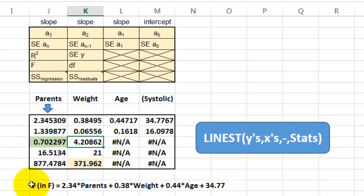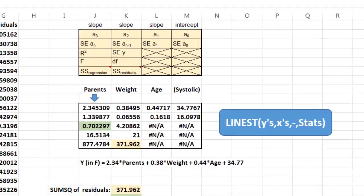So what I want you to know now, if you want to predict the systolic blood pressure based on those three independent variables, the formula should look like this: 2.34 times the parent's value plus 0.38 times the weight value plus 0.44 times the age value plus 34.77 as the intercept.